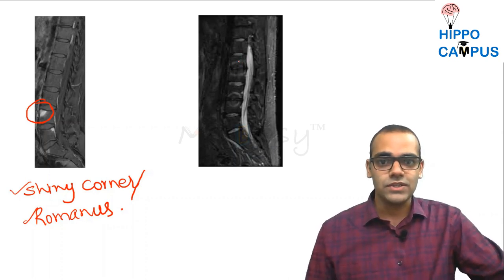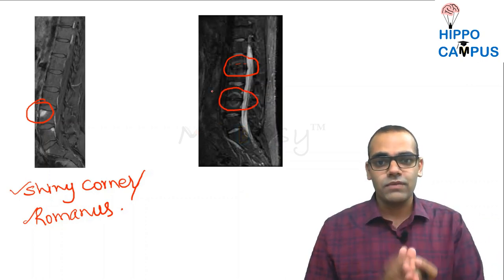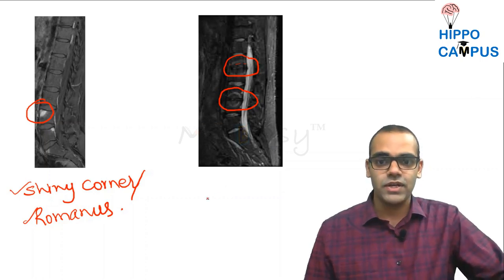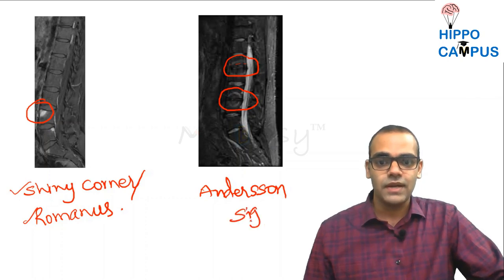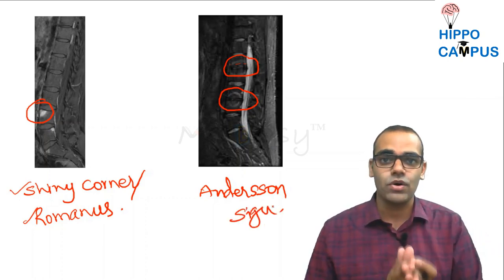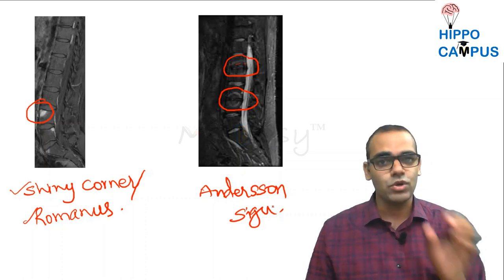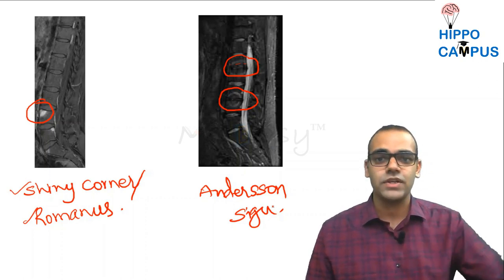Another important MRI sign is the disco-vertebral lesion — multiple adjacent vertebral bodies with disc inflammation. This is known as Anderson's sign, also called disco-vertebral lesion or spondylodiscitis of ankylosing spondylitis, due to inflammation in the adjacent area of the disc.